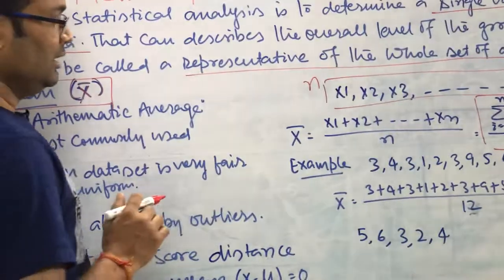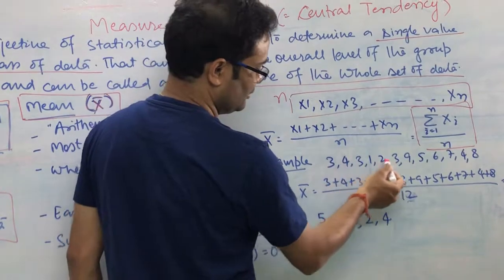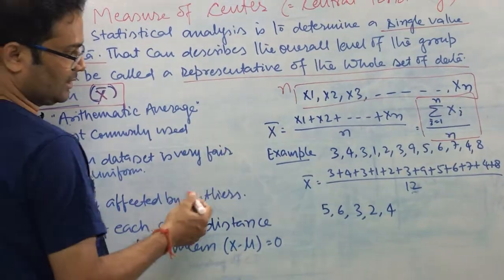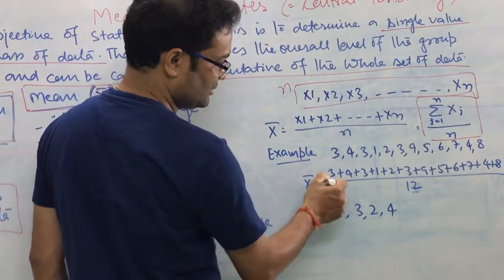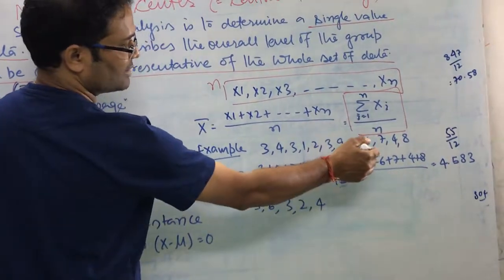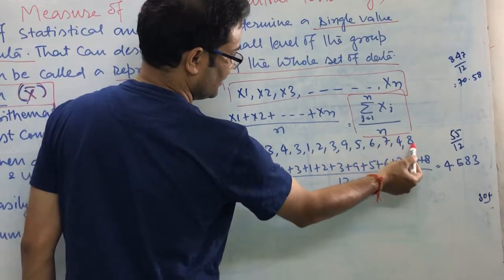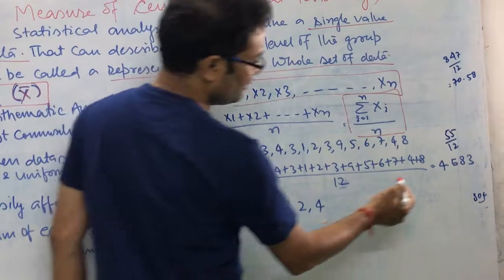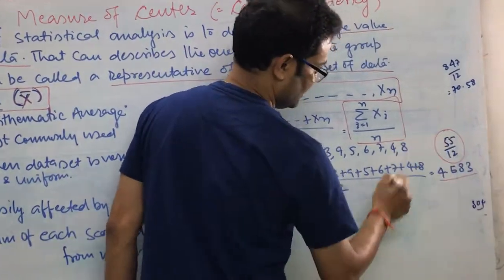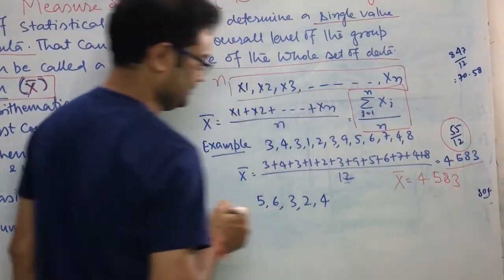Take one example. Suppose we are given this data: 1, 2, 3, 4, 3, 4, 3, 1, 2, 3, 9, 5, 5, 1. What is the mean of this data? So x-bar — what we have to do — add all the numbers and divide by how many numbers are given. We count: 1, 2, 3, 4, 5, 6, 7, 8, 9, 10, 11, 12 — we have 12 numbers. Add all the numbers, it becomes 55 divided by 12, and that is the mean. So x-bar is equal to 4.583.